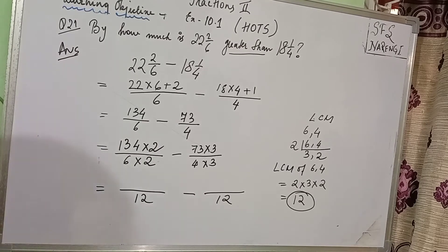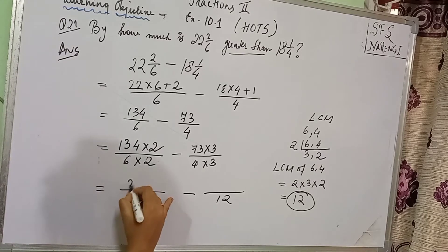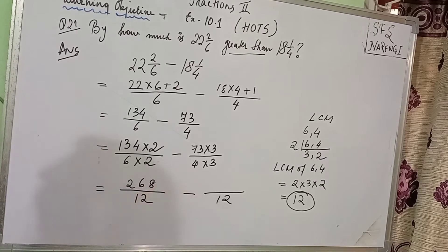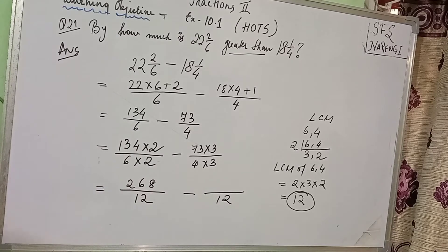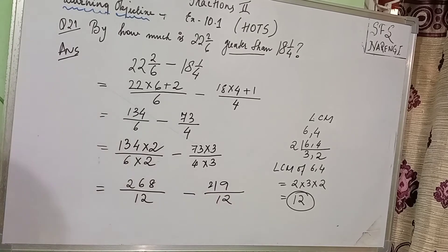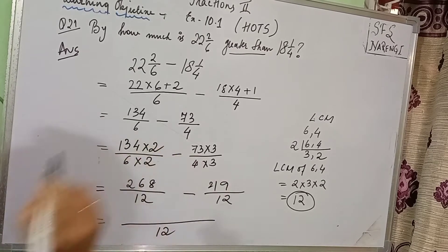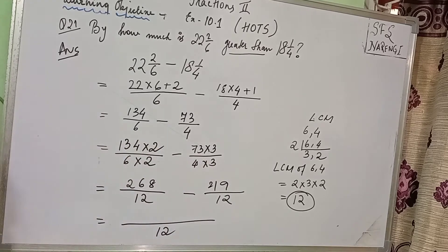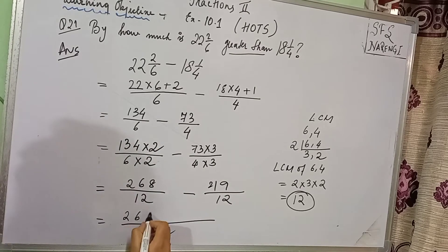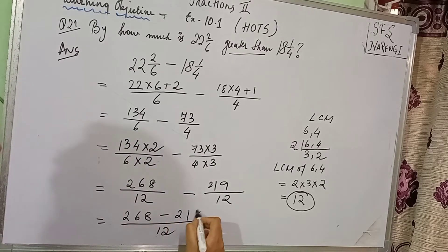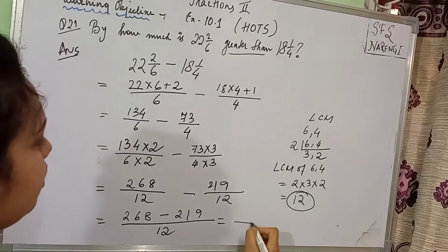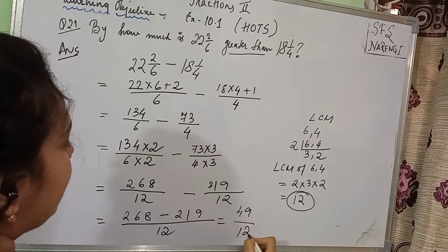134 multiplied by 2 is 268. And 73 multiplied by 3 is 219. All I have to do is subtract it — group it under the same denominator and subtract it. 268 minus 219. How much do you get, children? You get 49/12.